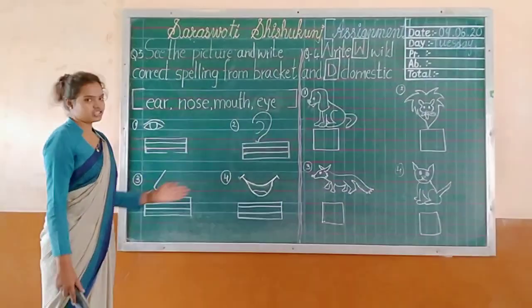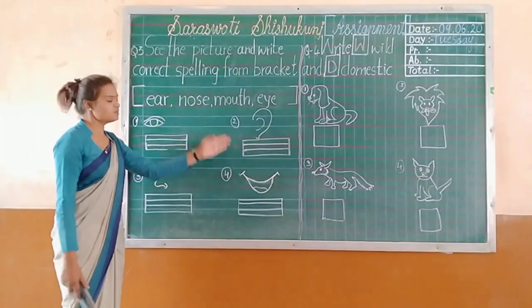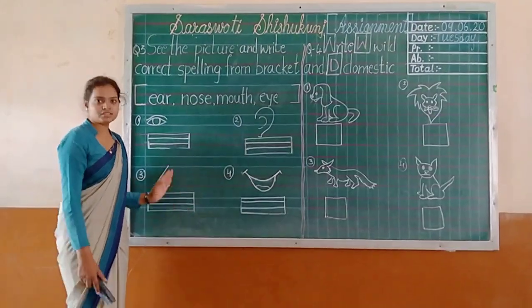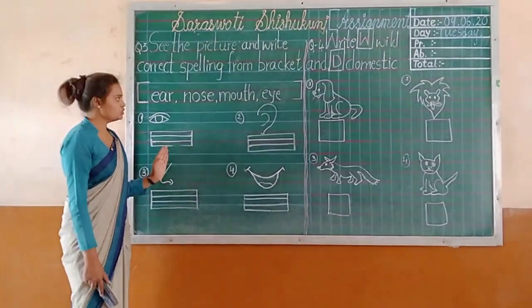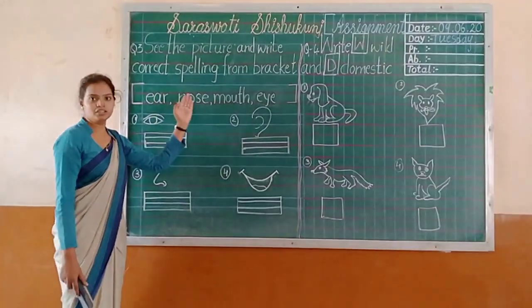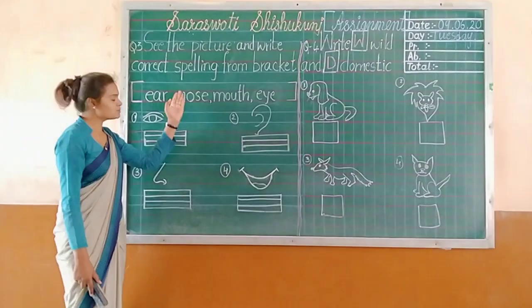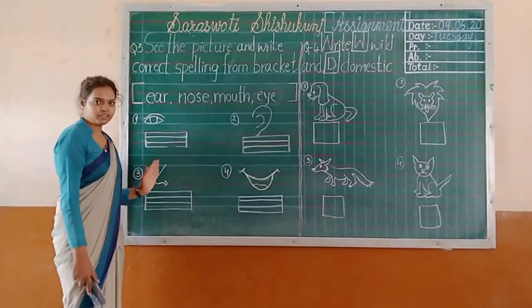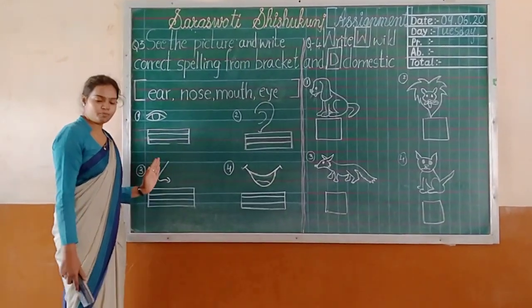See the picture and write the correct spelling from the bracket. See the pictures — here are some body parts. You have to find the correct body part spelling and write it in the bracket.